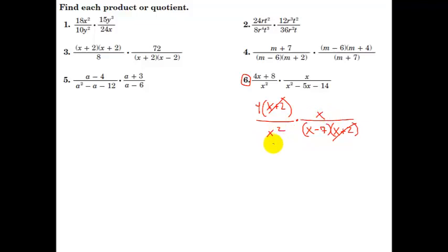The x plus 2 is going to cancel out with this x plus 2. This x and some of these x's will reduce. So our final answer is going to be 4 in the top. That x and that x reduces to just an x in the bottom, because there's 2 here and 1 here, so 1 in the bottom. And then we got the x minus 7 in the denominator.